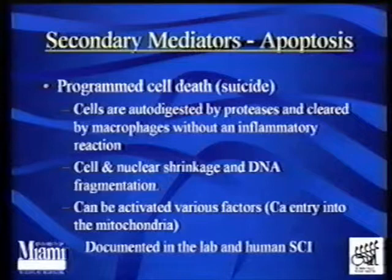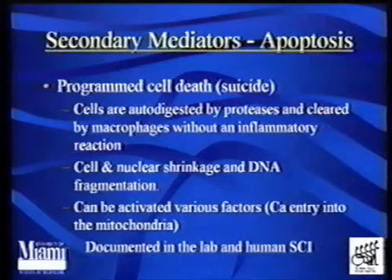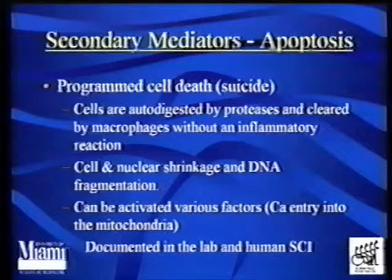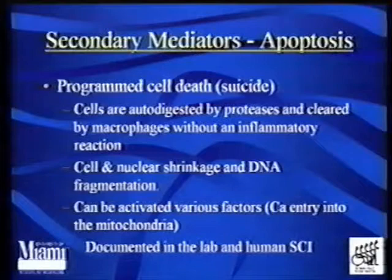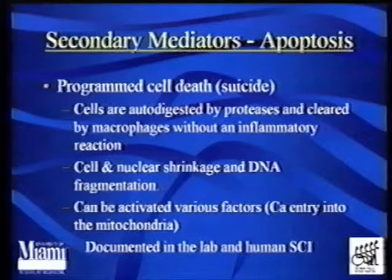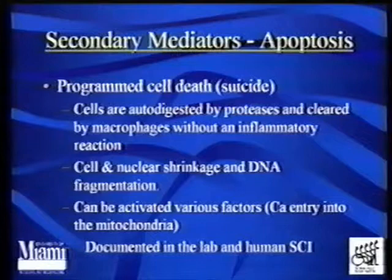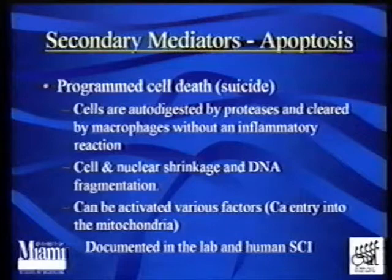The last wave that's really hit the secondary mediators field is the process of apoptosis — programmed cell death, or cellular suicide — utilized by the body during development for beneficial processes, but after activation in trauma and other disorders it can lead to uncontrolled cell death. This is different from the typical necrotic cell death from trauma. In apoptosis there's no inflammation; the cells are autodigested by proteases and cleared by macrophages, with no inflammatory reaction. Instead of swelling up and becoming edematous, the cells shrink, the DNA fragments, and it can be activated by various factors such as calcium and mitochondria. It's been fairly well documented in the lab and shown in human spinal cord injury.